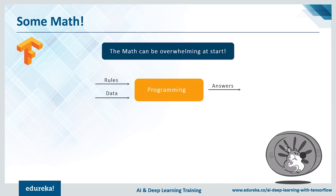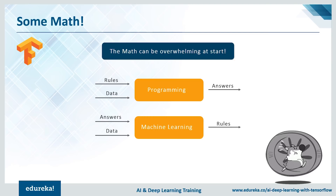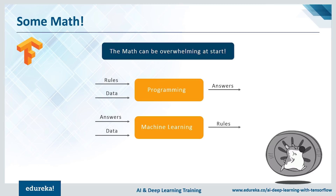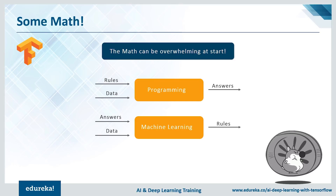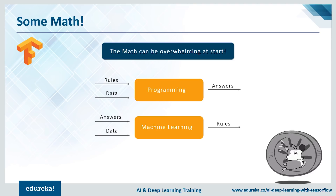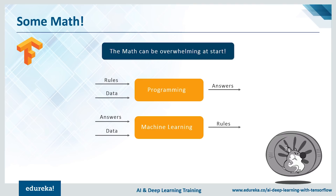We need to understand the difference between programming and machine learning. With day-to-day programming, you push some data and apply rules — instructions and conditions like 'if this then do that' — and eventually get an answer. With machine learning, it's a little different. You push the answer at the start along with the data, and when you want to retrieve something, the machine learns and processes rules on its own. For example, you show images of cats and dogs, label them, and train the machine so that when you provide a random image, it applies a rule set to classify it.